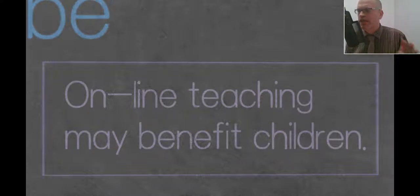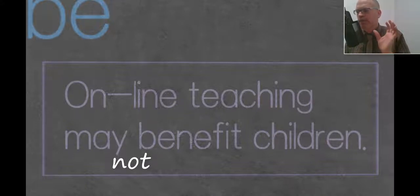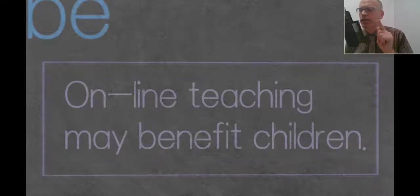Sometimes we are going to use a negative. So we might use it in this way. So online teaching may not benefit. Or online teaching would not benefit. And the same if we were going to use the adjective form. So we might say online teaching may not be beneficial. Or online teaching might not be beneficial. So notice if we are making it negative, we put the not in the middle.